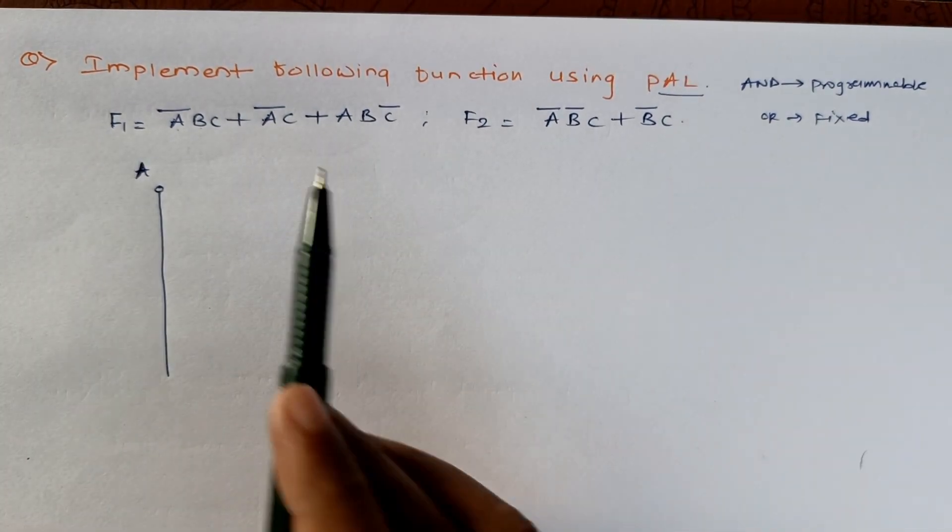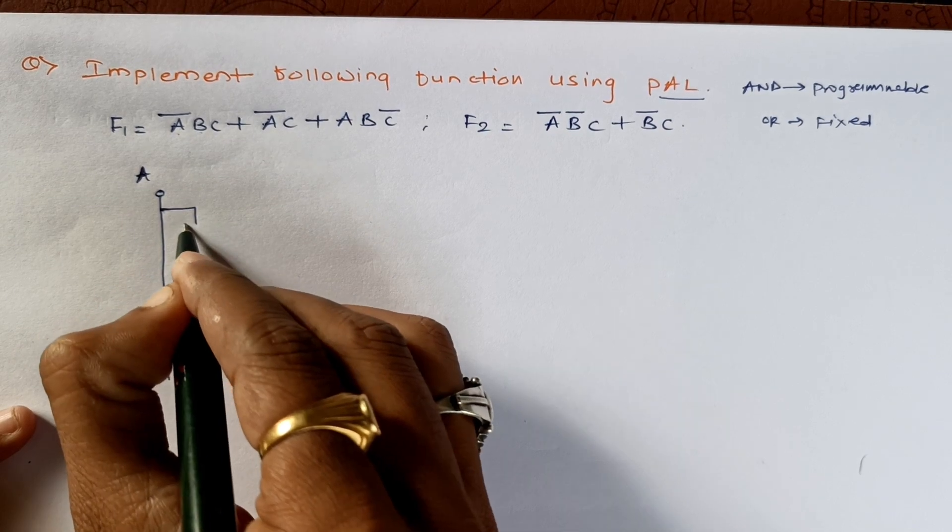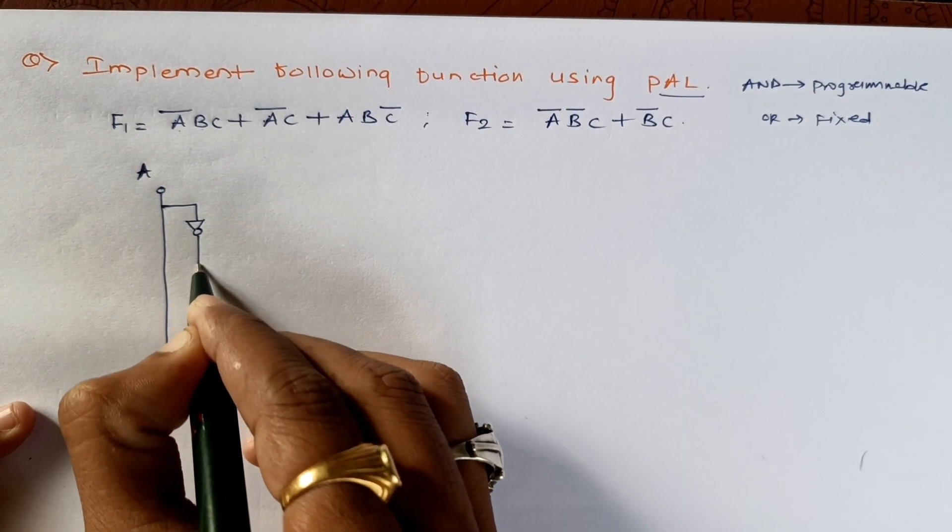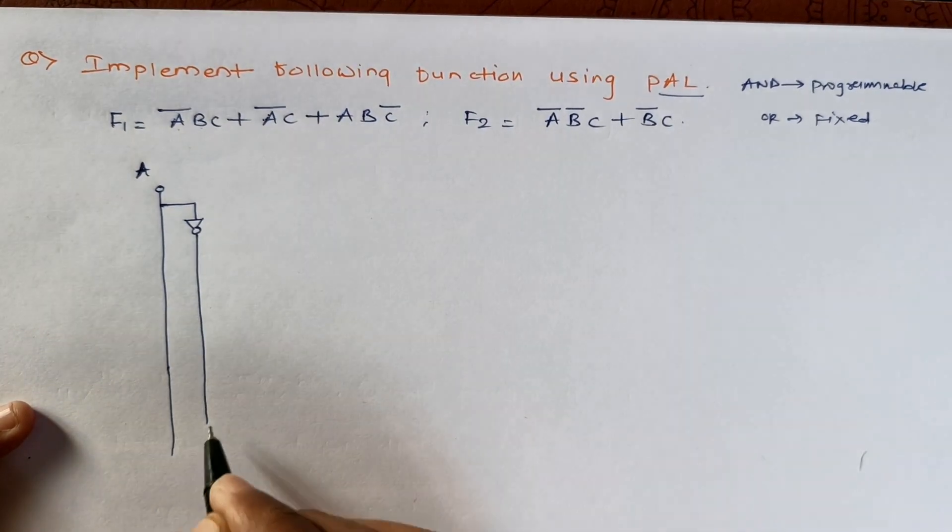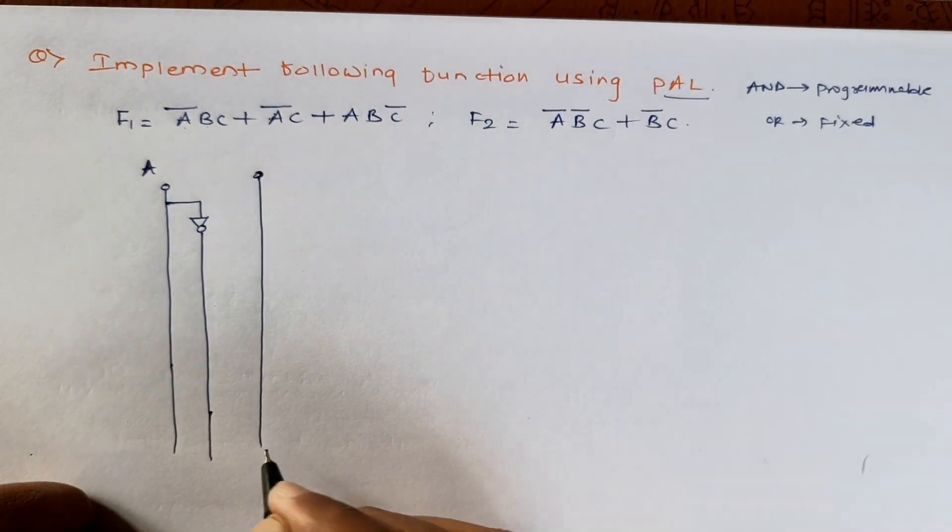So this will be the structure for A and A bar. Similarly, we will take it for B and B bar as well.